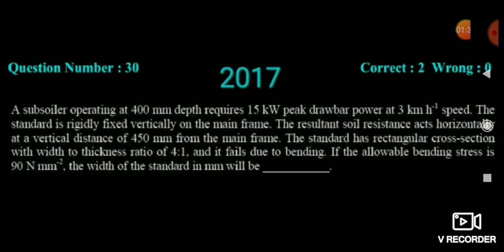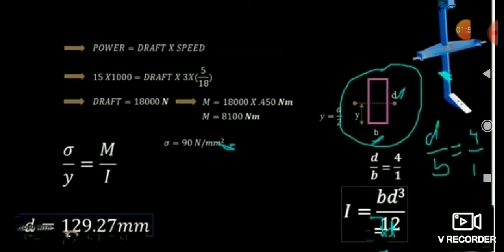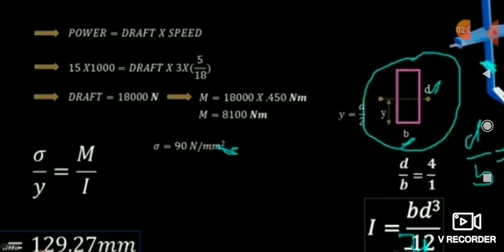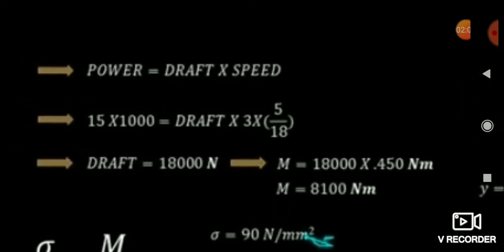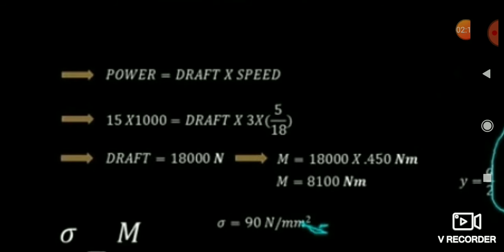In the question, 15 kW of power and drawbar speed of 3 km/h are given. Since speed and power are given, you can calculate the draft. Power = draft × speed, so the draft is calculated as 18,000 N.